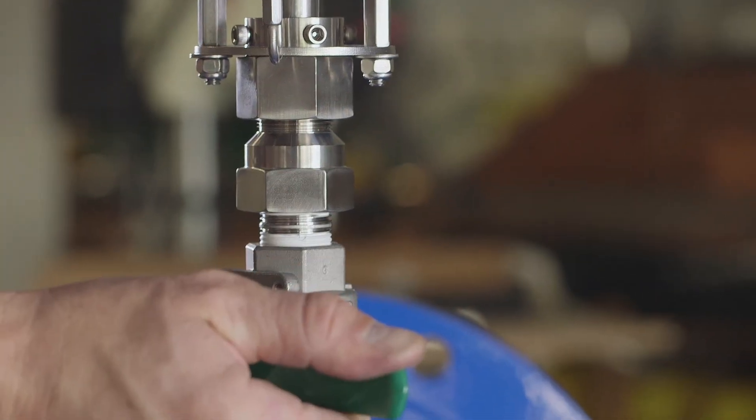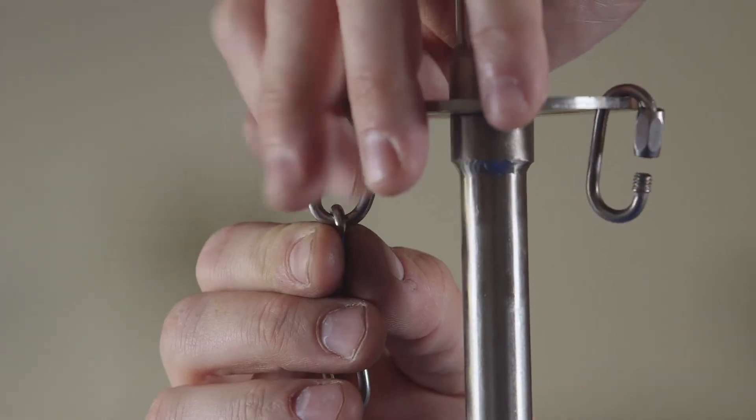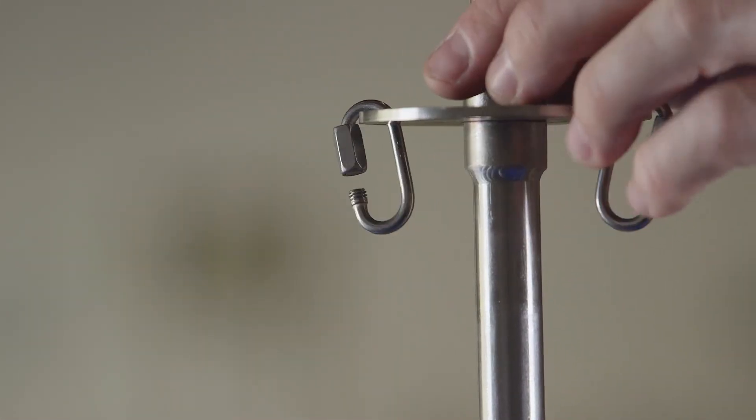Now that the valve is closed and the pipe has been isolated, disconnect the limit chains from the upper threaded connectors and completely remove the solution tube.